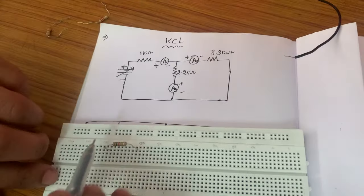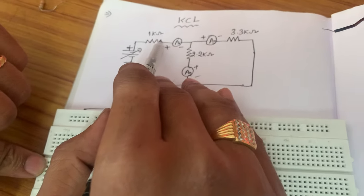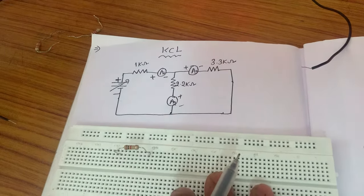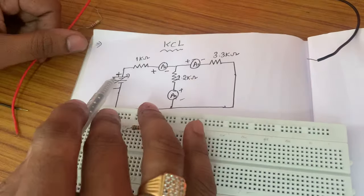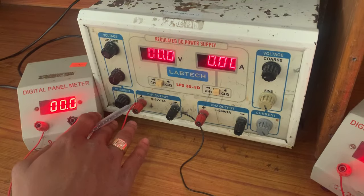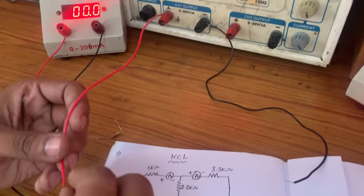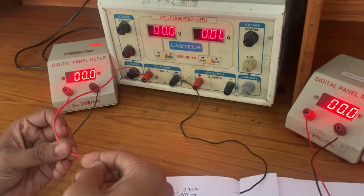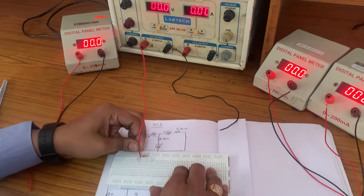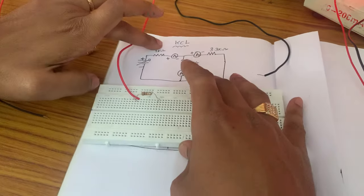Now let's connect. This is the 1 kΩ resistor. The RPS positive terminal — this is called the RPS positive — is connected to the 1 kΩ resistor's first terminal.